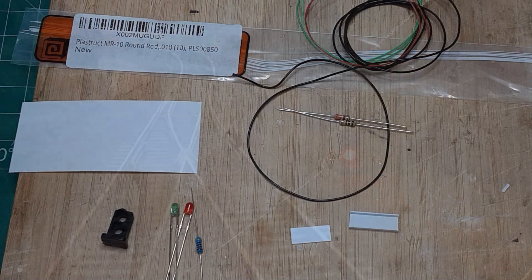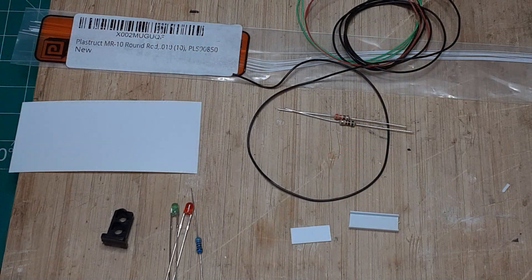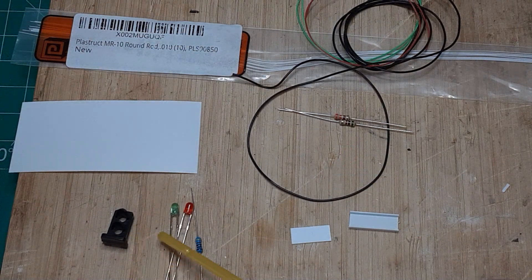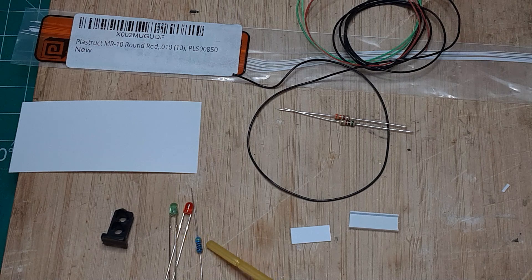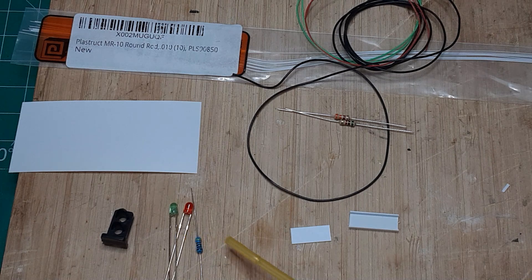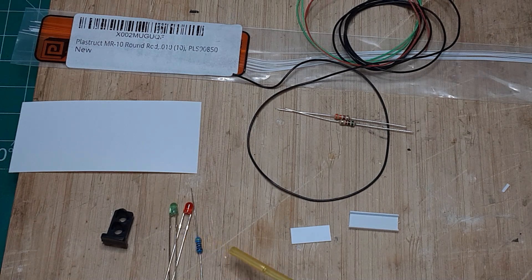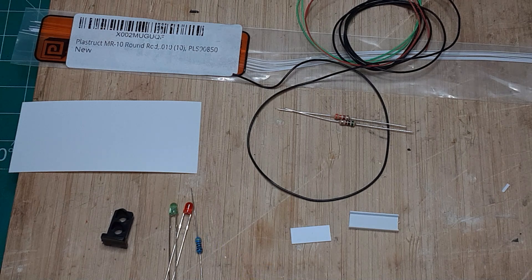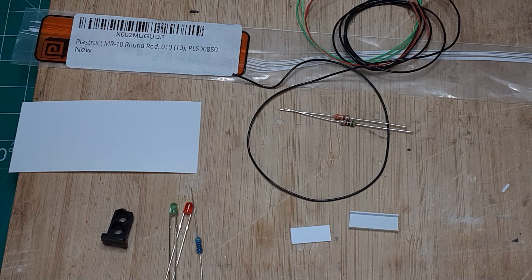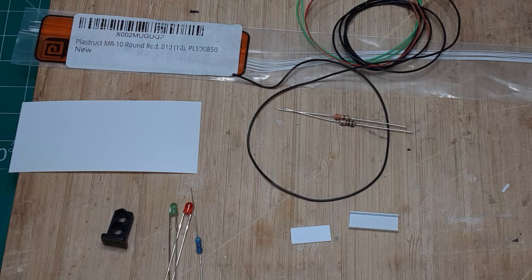Here are the components I use to build my dwarf signals. The signal heads, LEDs, and resistors come as a set containing 10 heads, 10 red LEDs, 10 green LEDs, and 10 resistors. The set costs about $10.